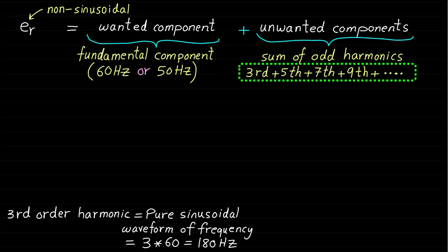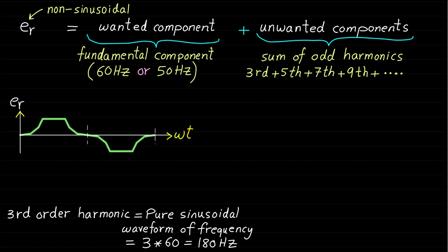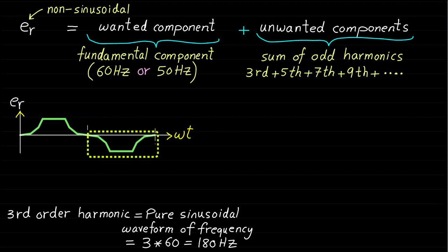The even-order harmonics are absent or do not exist because of the symmetry of the trapezoidal induced voltage. That means even-order harmonics do not exist because the positive half cycle of the waveform is equal or identical to the negative half cycle of the waveform. So, now we know that the unwanted harmonics are all odd-order harmonics.